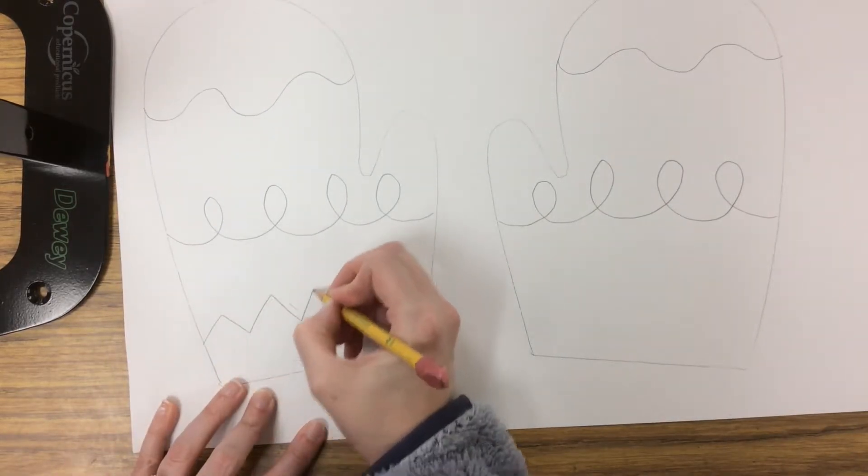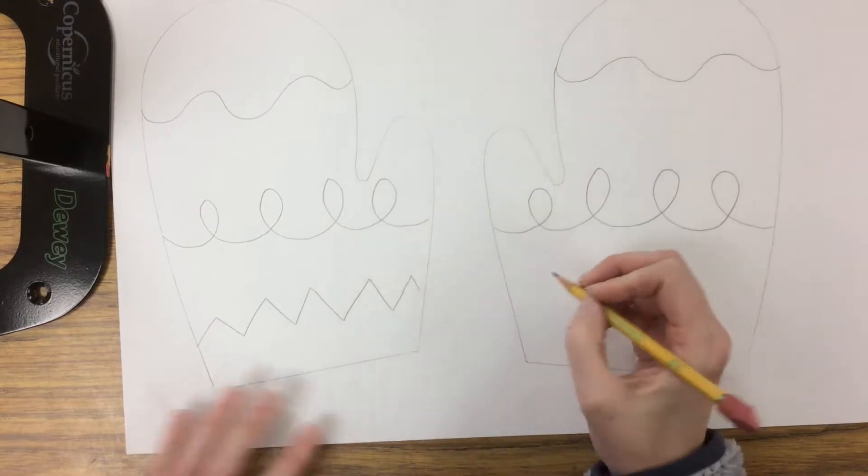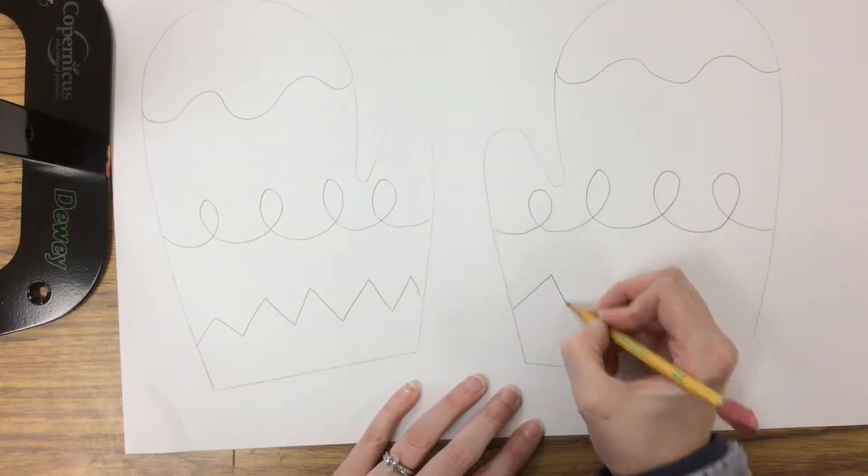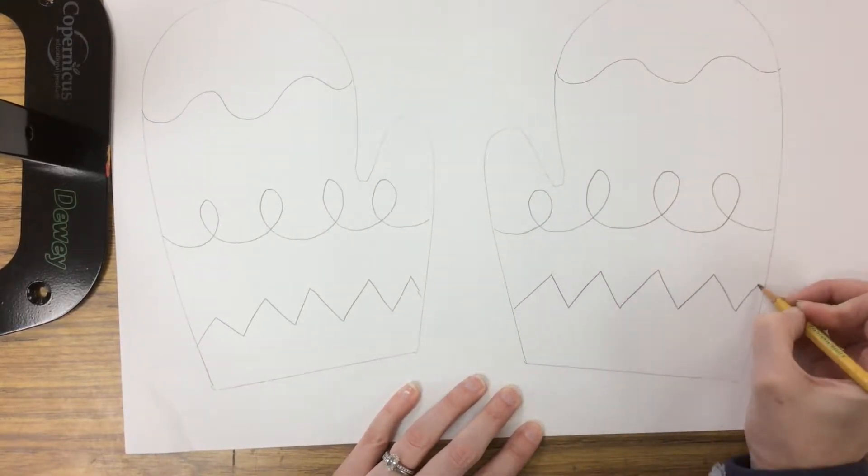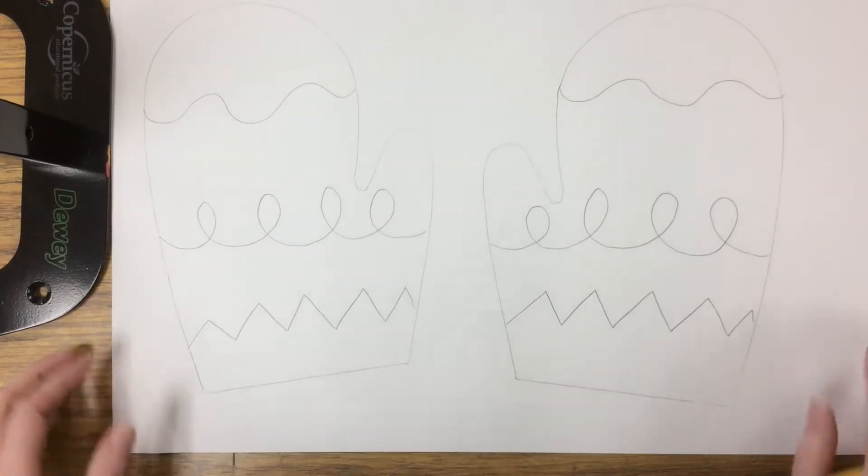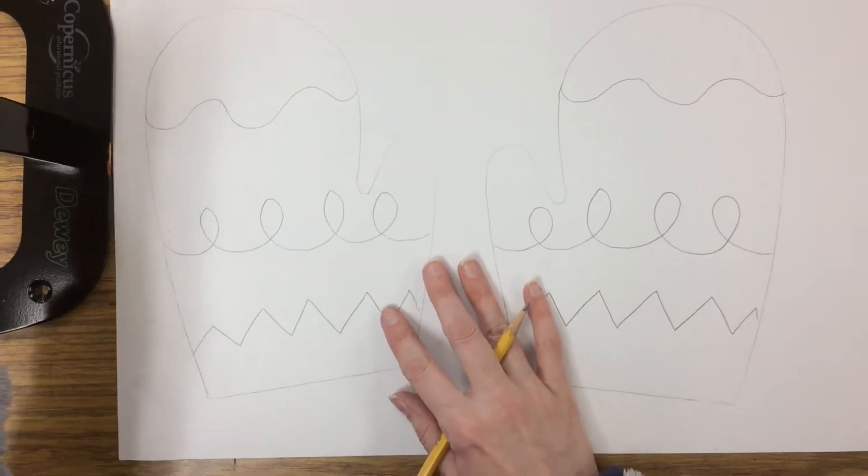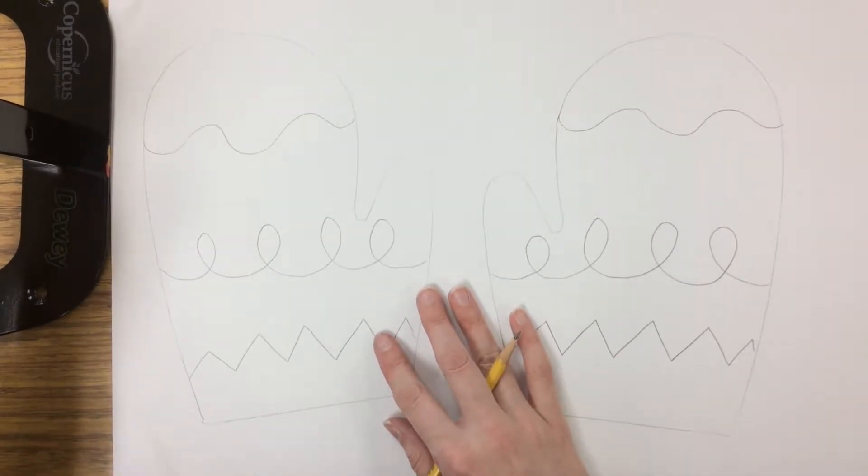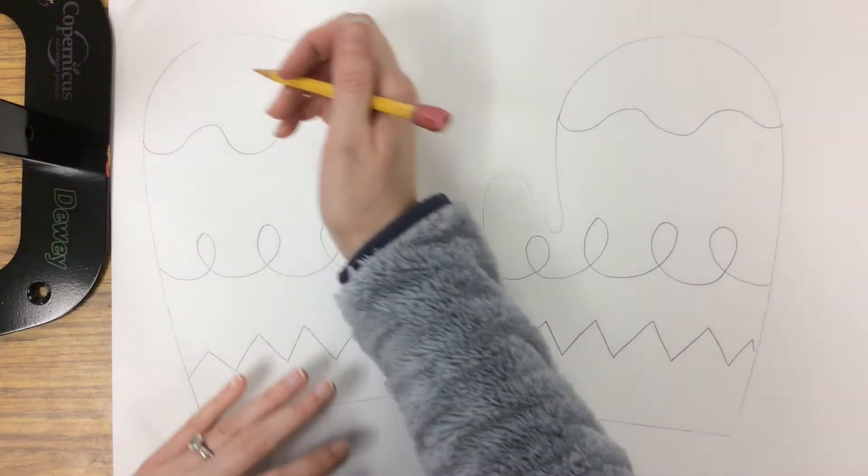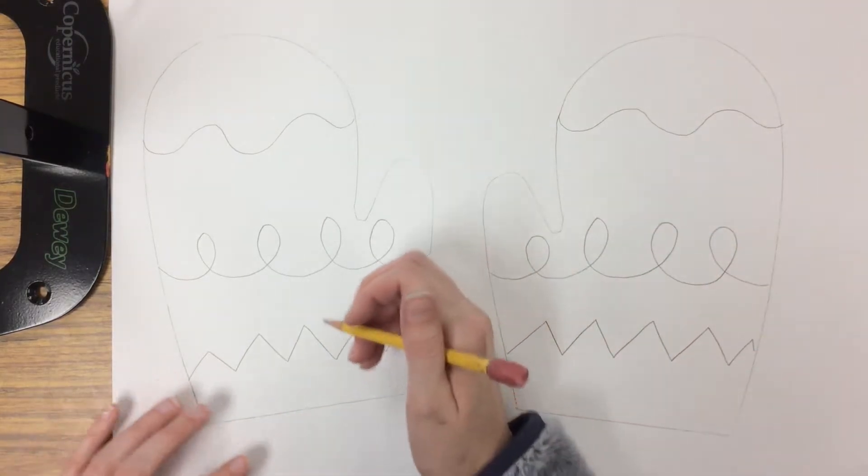And one more line. So maybe I'll do zigzag, up and down. Next, once I've got my lines drawn in on both, I'm going to draw shapes or pictures that I can color in.